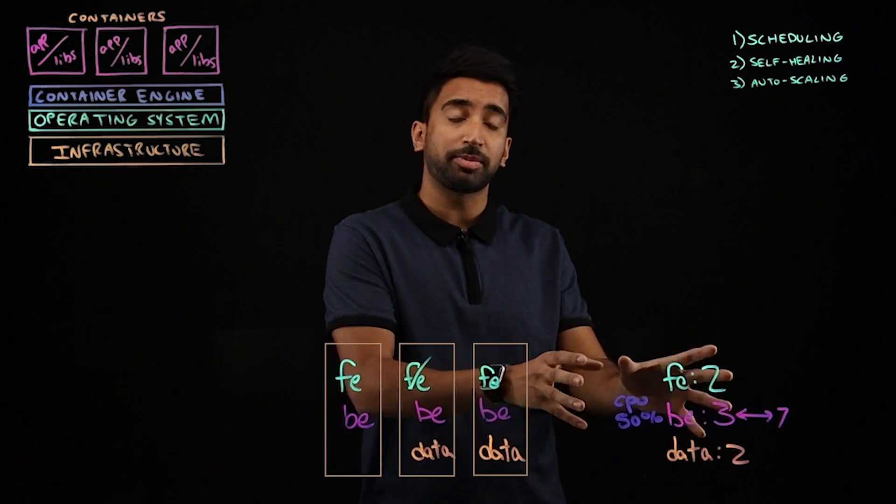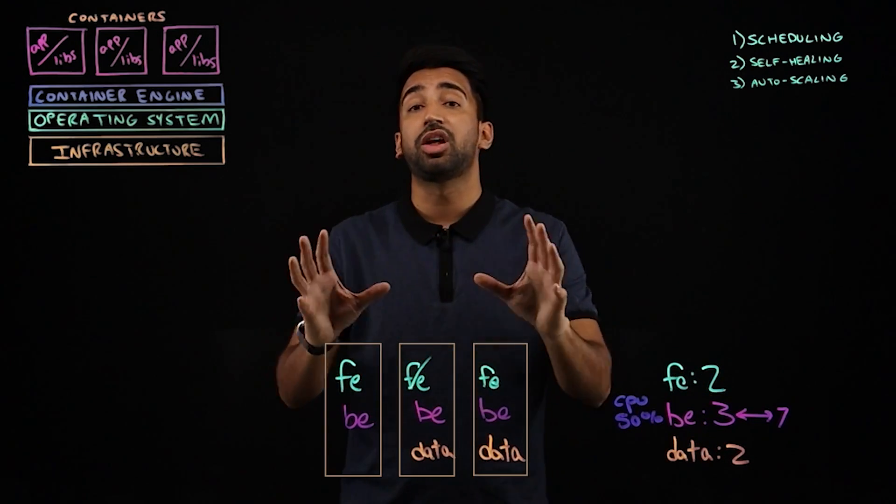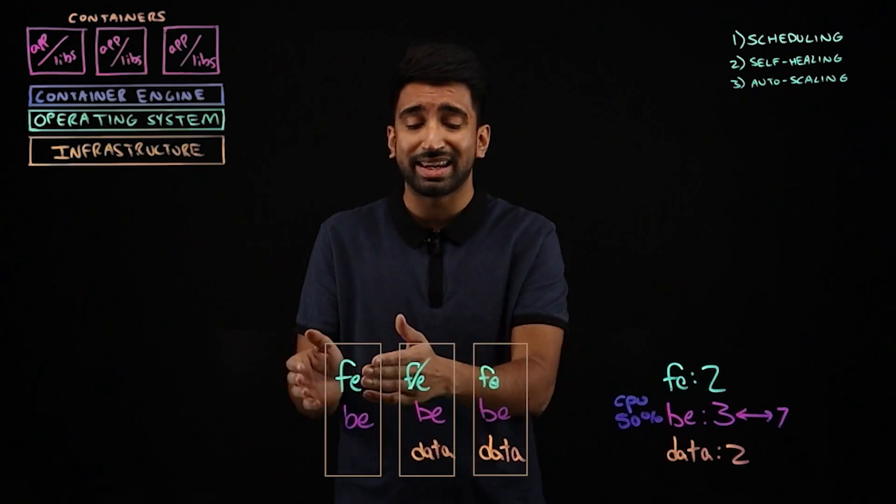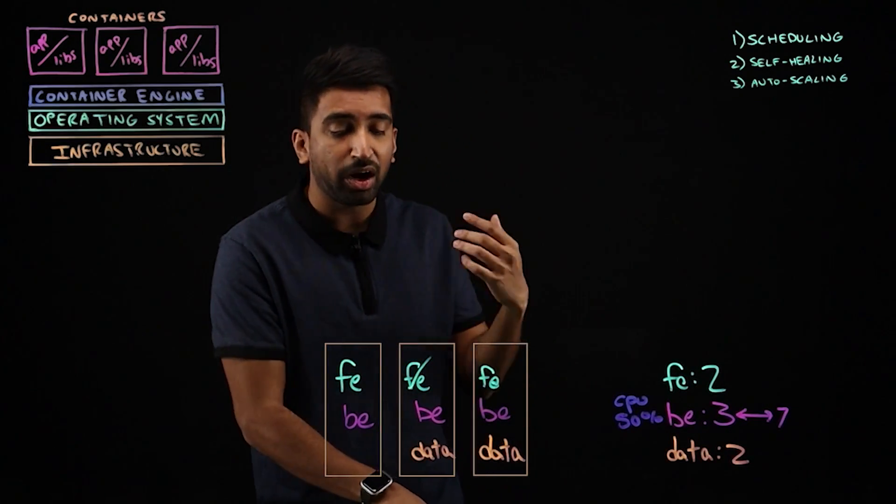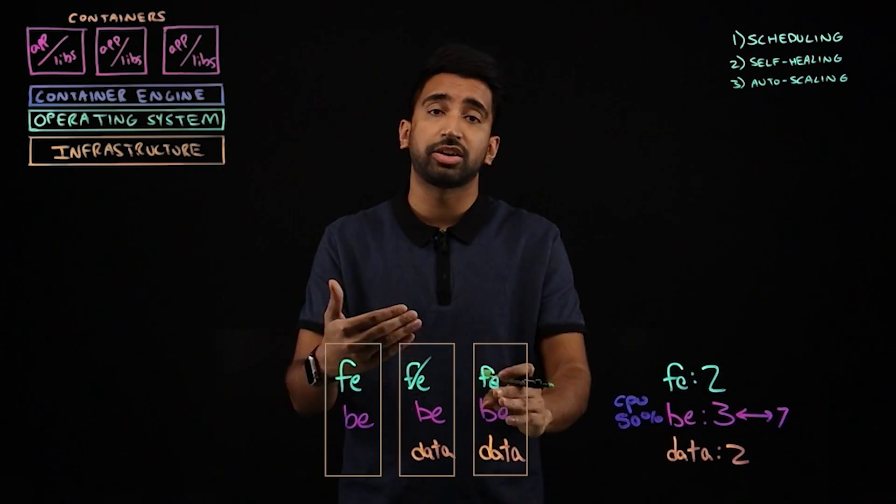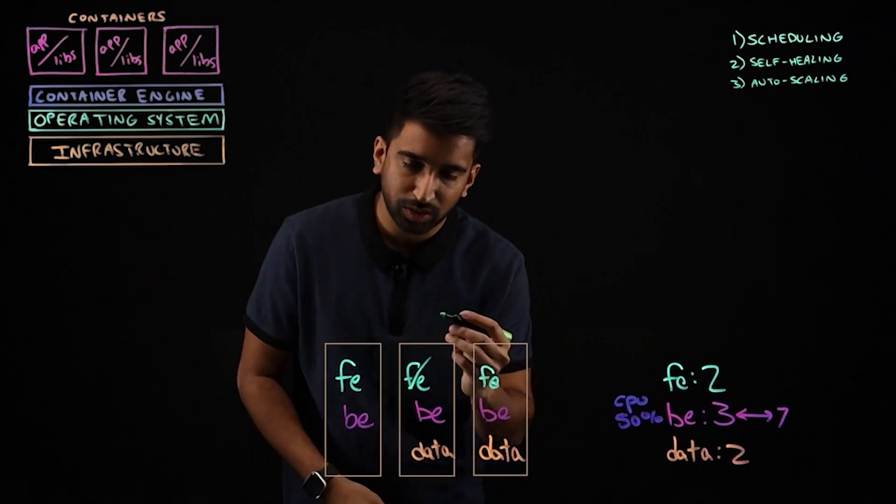So we've talked about self healing, we've talked about auto scaling. One of the things we've glossed over is the networking of this all. These are all running on different nodes, they each have different IP addresses that might be changing. How, as developers, can we tell these containers how to talk to one another? It's a really cool concept.